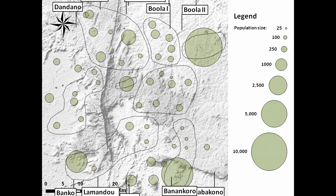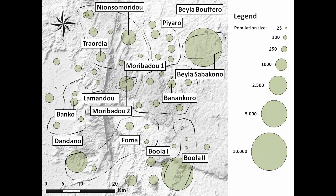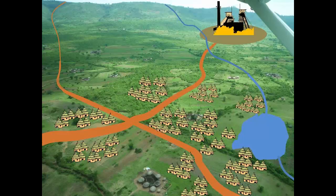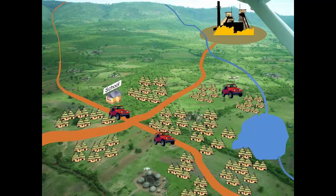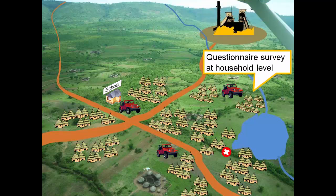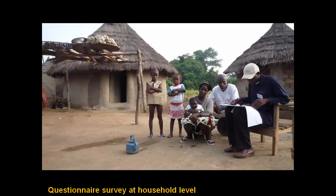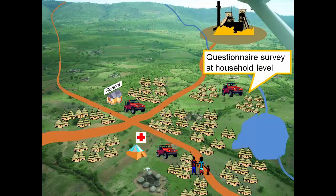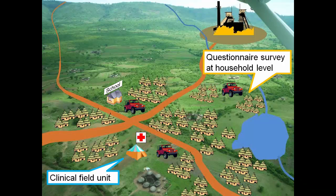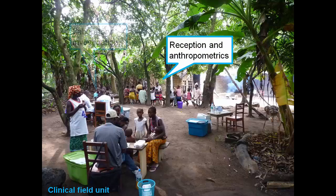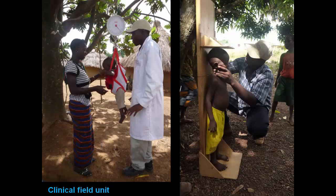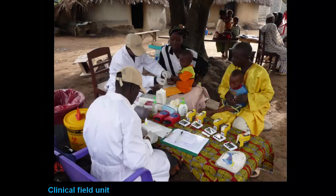In potentially affected communities, sentinel sites were selected, which were then covered by different survey modules. The questionnaire survey team randomly selected households with the aim of obtaining broad coverage of the sentinel site. Through interviews, knowledge, attitudes, and practices related to various health issues were assessed, and structural and asset indicators were determined. Once the interview was completed, the family visited the clinical field unit so that clinicians could investigate biomedical indicators such as anthropometric measures, as well as health factors, plasmodium infection, and hemoglobin level.